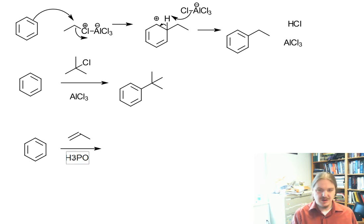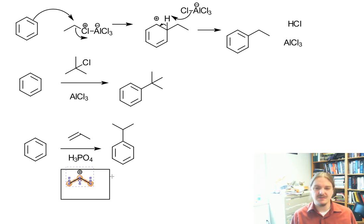That being said, Friedel-Crafts type reactions also can occur with other things that generate carbocations. And so for example, a commercially important alkylation of benzene is the reaction of benzene with propene to make cumene, which is then the precursor for making phenol and acetone. And propene and phosphoric acid will react together to form the isopropyl cation, which is the active electrophile in this particular reaction.